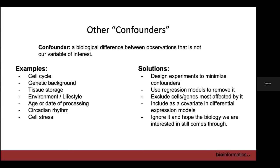There are several possible solutions. You can design your experiments to eliminate them — though that's not always possible, e.g., you can't select genetically identical human patients. You can use a regression model to remove the effect. You can exclude the cells or genes most affected — that's often used for cell stress, where cells with really high stress signatures are thrown out. You can include the covariate in differential expression models, or — what lots of people actually do — just ignore it and hope the biological signal of interest is stronger than the confounder.